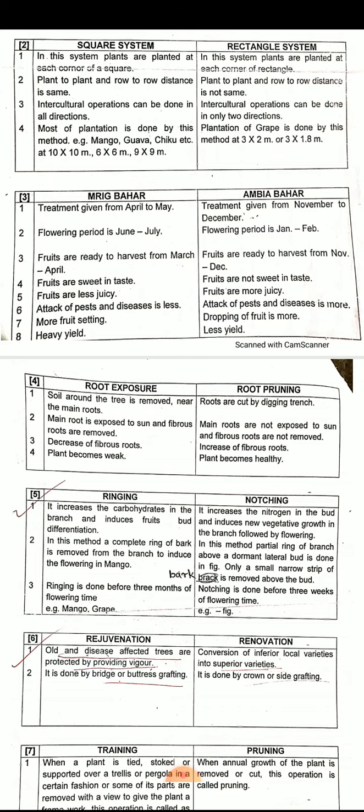In Mrig Bahar, attack of pests and diseases is less. In Ambiya Bahar, attack of pests and diseases is more. In Mrig Bahar, there is more fruit setting, while in Ambiya Bahar, dropping of fruits is more.